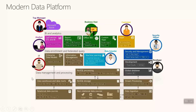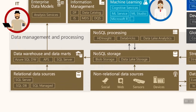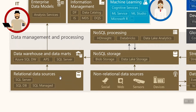Let's start with the lower bottom layer of data management and processing. Here we have different types of data sources. First of all, we have relational data sources — relational databases — and these databases can be handled in SQL Server on-premises or based on a virtual machine. If we talk about Microsoft Cloud, Azure, it can be SQL Database or SQL Managed Instance.